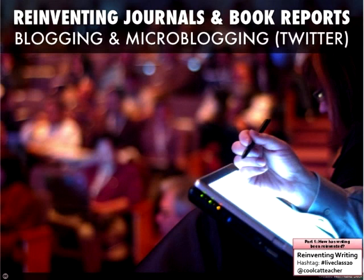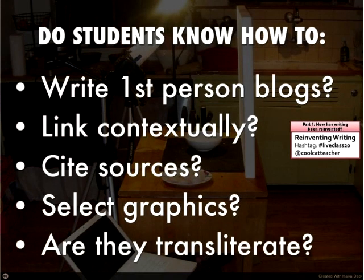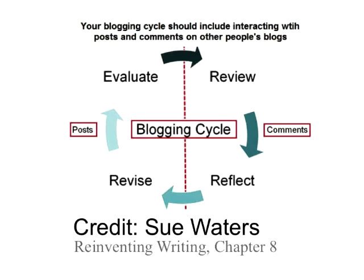Let's move ahead quickly. Reinventing journals and book reports — blogging and microblogging. Do students know how to write first-person blogs? Do they know how to link contextually? Hyperlinking is very different from citing sources. I look for dead text — if a student has written a three-paragraph blog post without a hyperlink, they lose points, because if you're writing online you should have hyperlinks. You are only as authoritative as where you link. Do they know how to cite sources, select graphics, and are they transliterate?